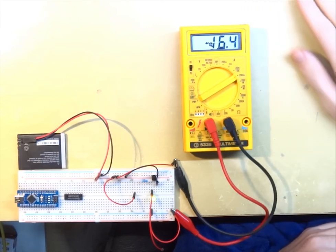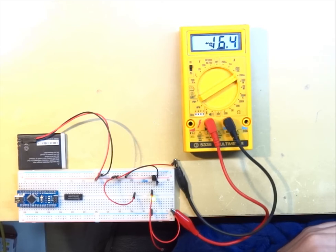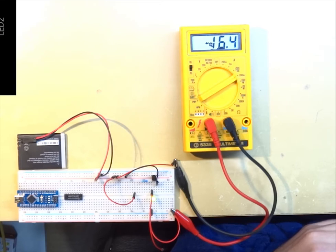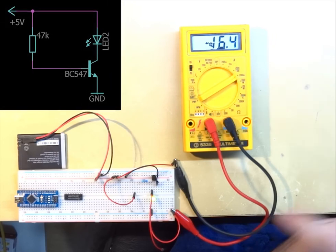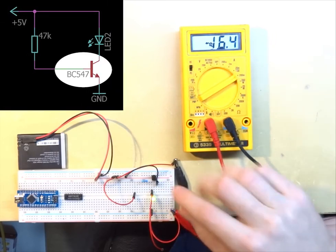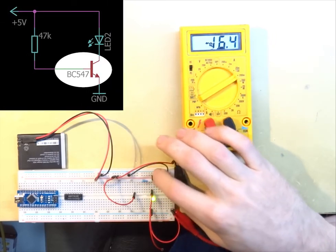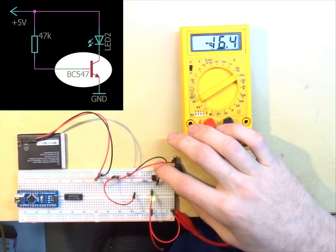Okay, so here I am back with my current limiting and short circuit protection circuit, and now I have figured out that all you need is one transistor, one resistor. Here we see a normal transistor, it's a BC547 NPN transistor.